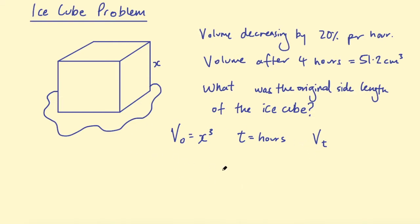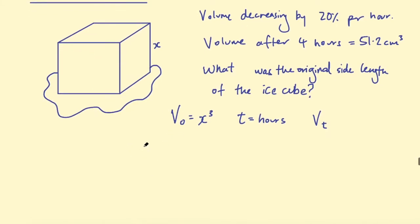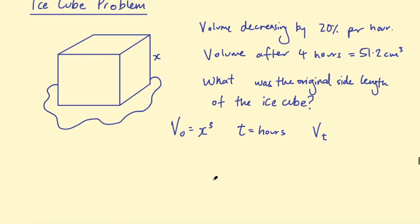So now we need to create an equation relating Vₜ to the original volume. We need to figure out how to decrease something by 20%. So the volume after t hours is the original volume V₀ multiplied by 0.8. And we still need to add something to this. But let's consider - if this was after one hour, we would multiply it by 0.8.